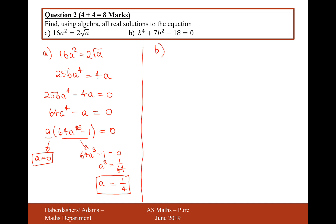That's the answer to part A. Let's now move on to part B. What I'm going to do is be a bit sneaky and reduce these powers by setting C equal to b squared. Therefore, if I do C squared I get b to the power of 4. So I'm going to write b to the power of 4 as C squared, plus 7C — because that's the value of b squared — minus 18. I've reduced the powers, and I'll bring b back in later.